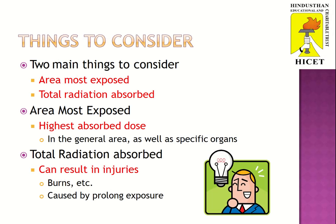There are two main things to consider during fluoroscopy. The first is the area most exposed, meaning the highest observed dose in the general area as well as specific organs. The second is the total radiation absorbed, which can result in injuries and burns caused by prolonged exposure.